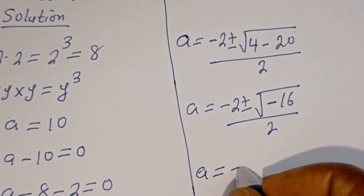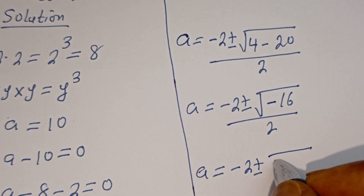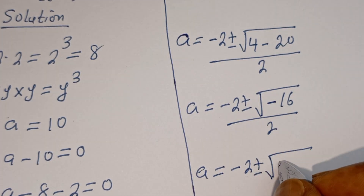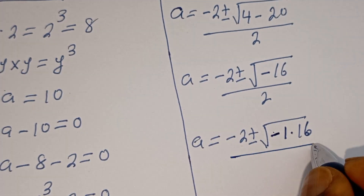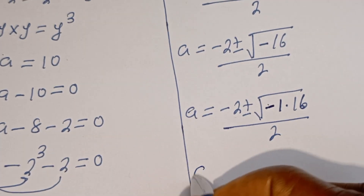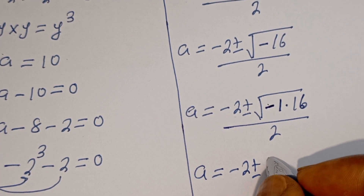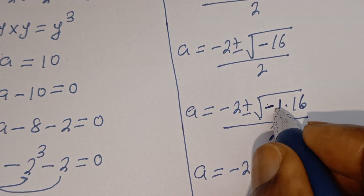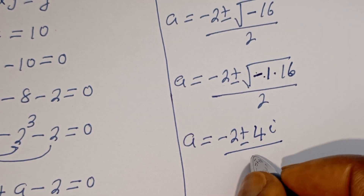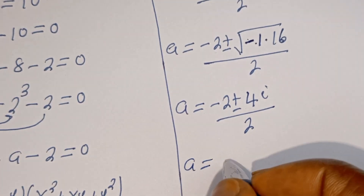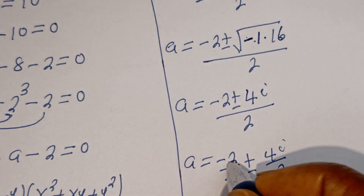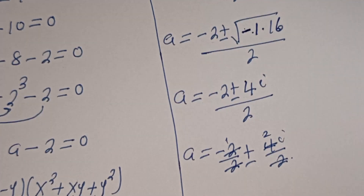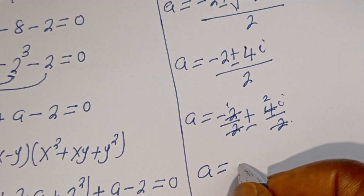Then A equals negative 2 plus or minus the square root of negative 16. The square root of negative 16 can be written as plus or minus square root of 16 times square root of negative 1, which is plus or minus 4i. Dividing everything by 2 gives A equals negative 1 plus or minus 2i.